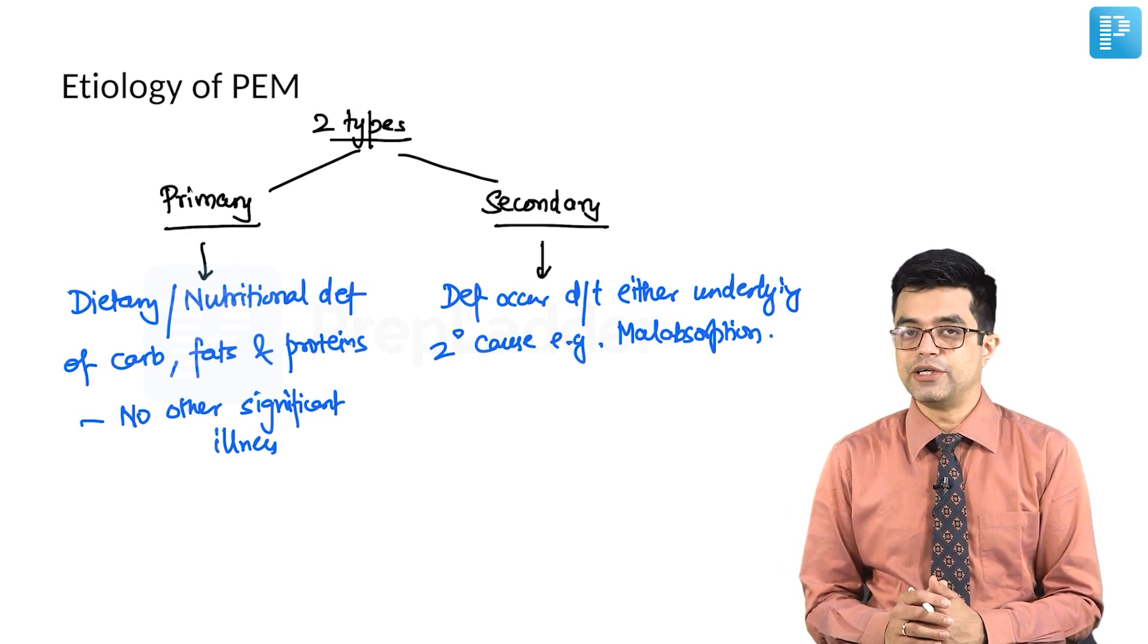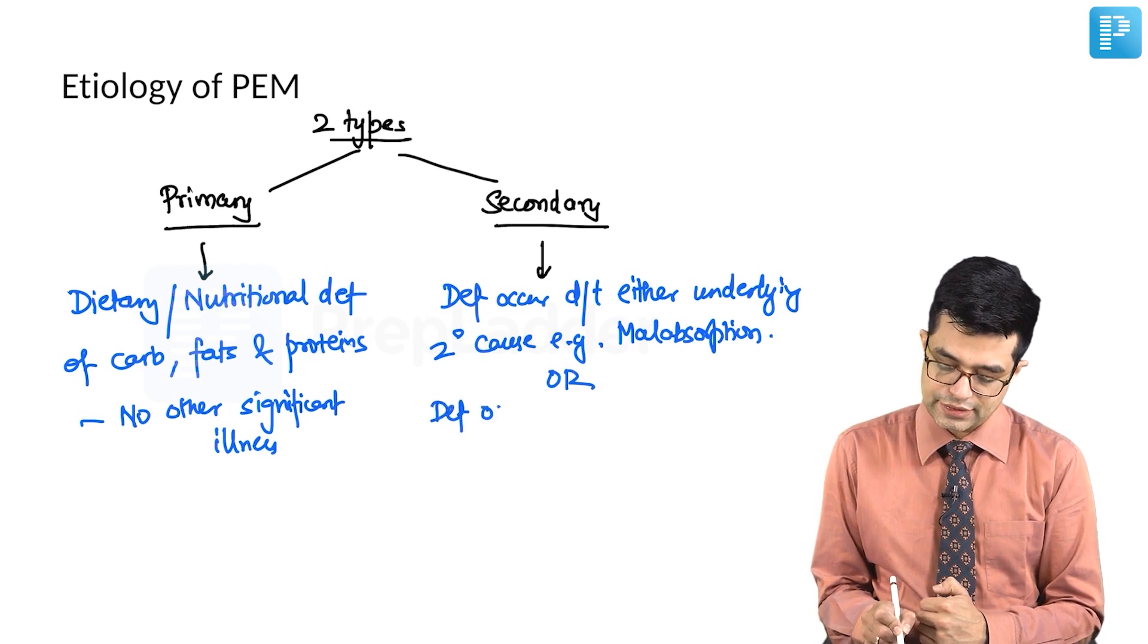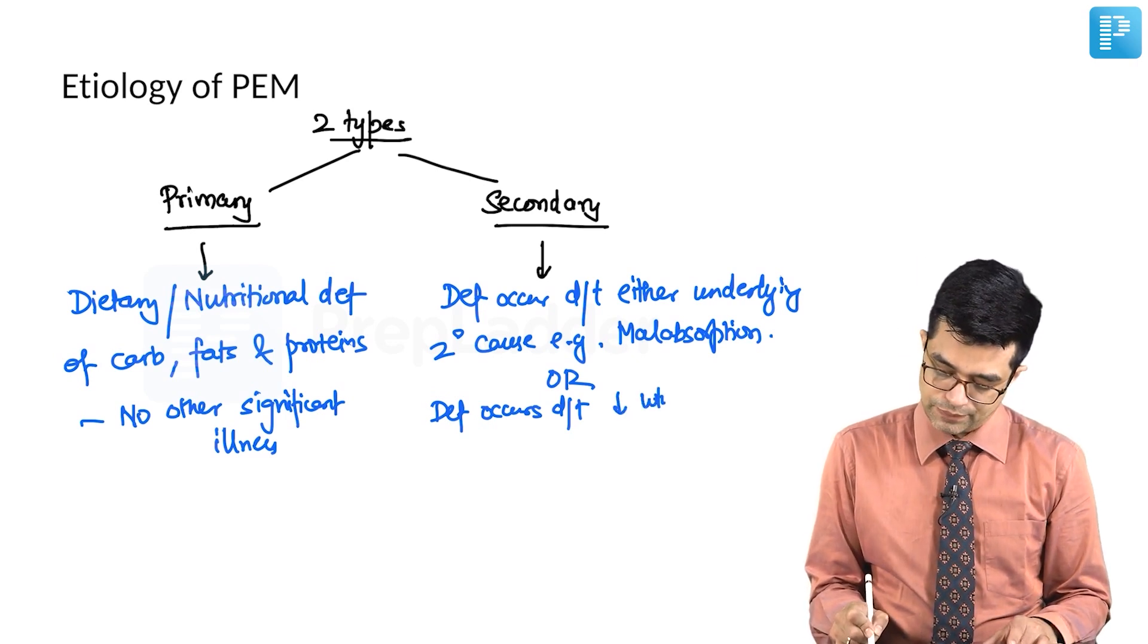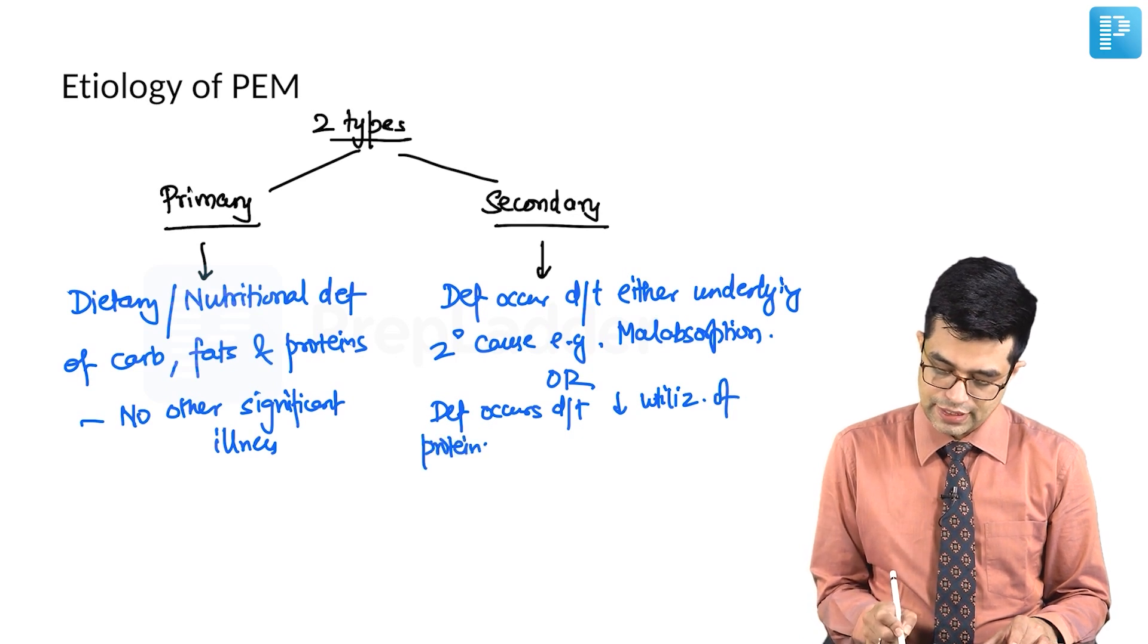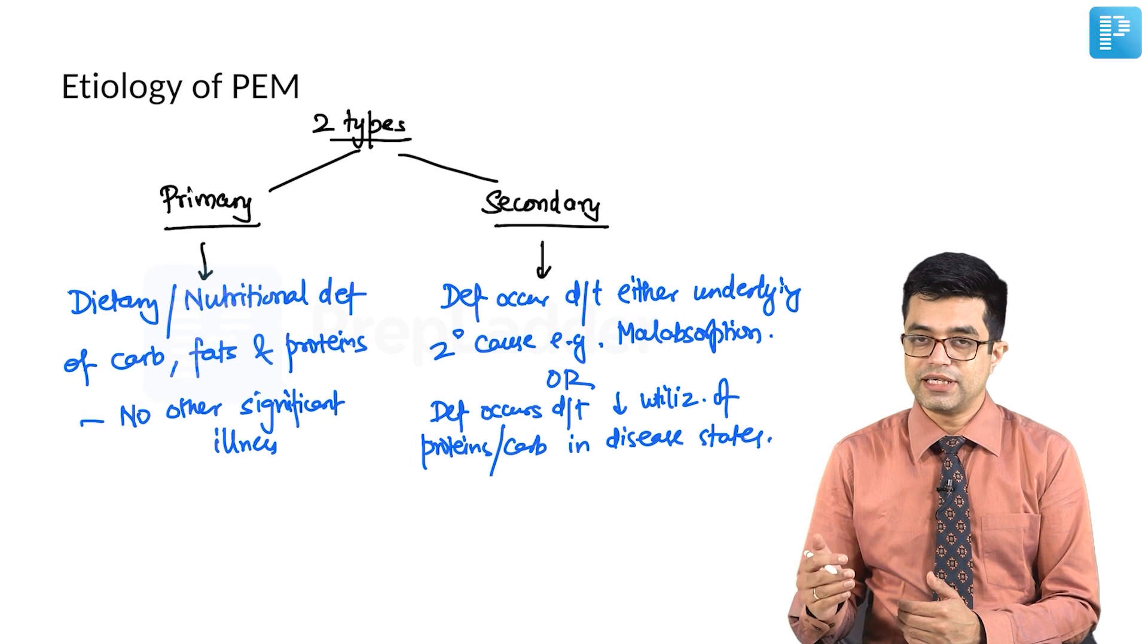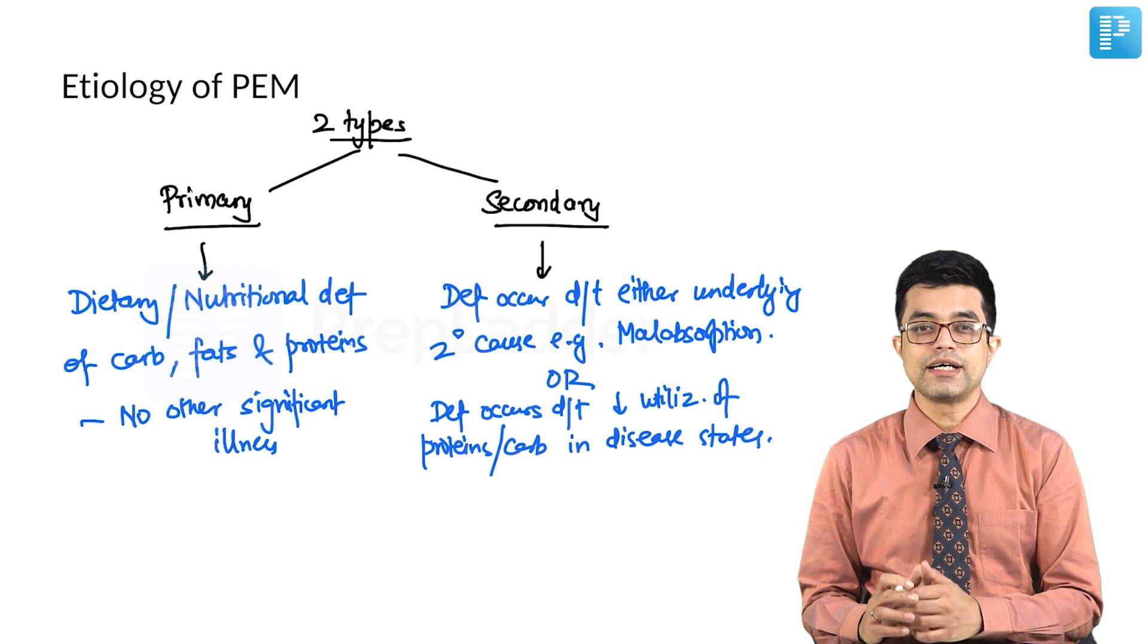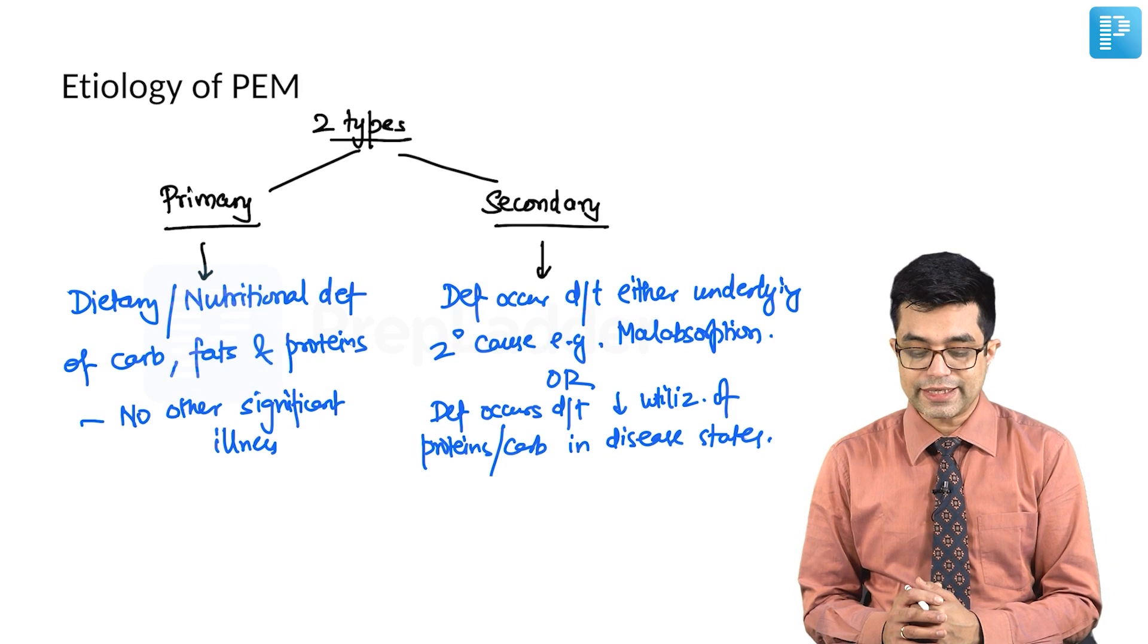The patient will develop features of malnutrition that is called a secondary malnutrition, or the deficiency occurs, the manifestations occur due to decreased utilization of proteins and carbohydrates in various disease states. If there is metabolic predispositions, recurrent infections or similar scenarios which interfere with the proper recycling or the metabolic processes eventually resulting in the manifestations of the deficiency, that is called a secondary PEM.